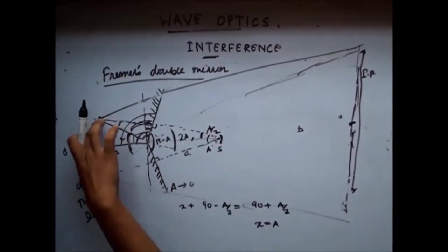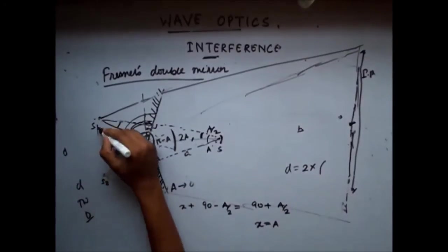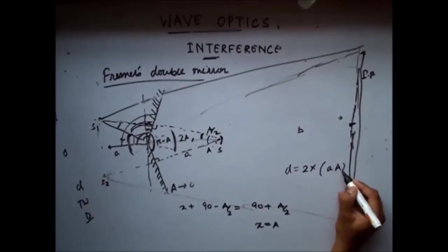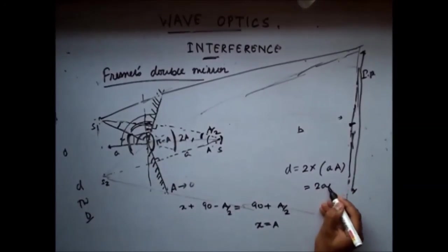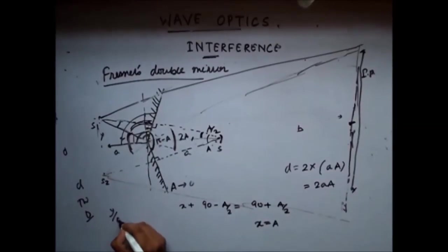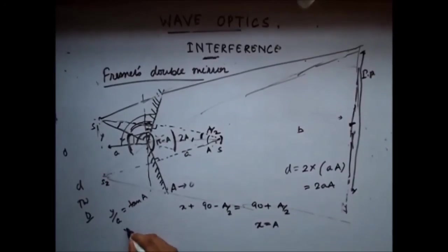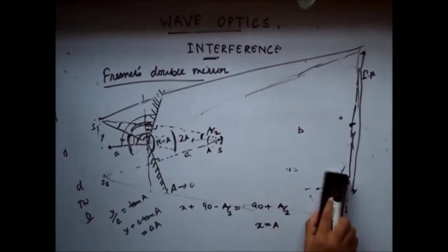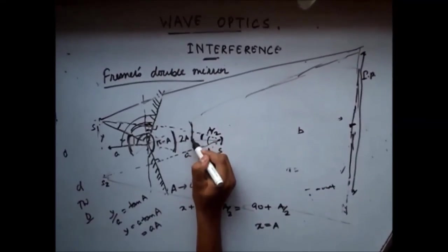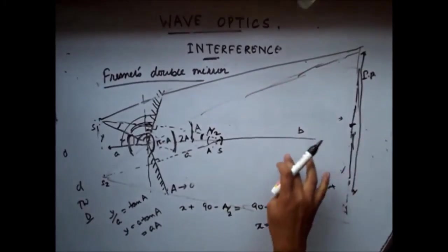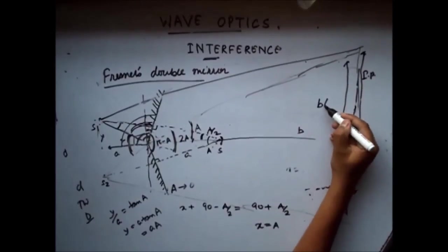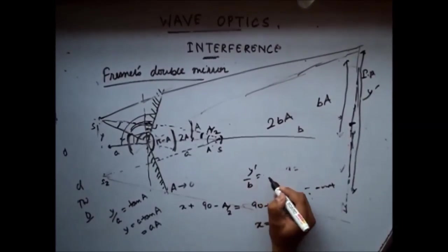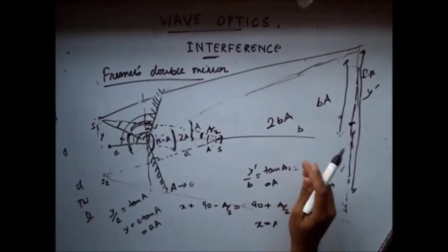The distance d equals twice the half-separation, which is simply a × A. For this small height y, y/a = tan A ≈ A since angle A is very small, so y = aA, and the distance between the slits is d = 2aA. Similarly, the total width of the interference pattern: the whole angle is 2A, so half-width is b × A. Writing y′/b = tan A ≈ A, so y′ = bA, and the total width is 2bA.